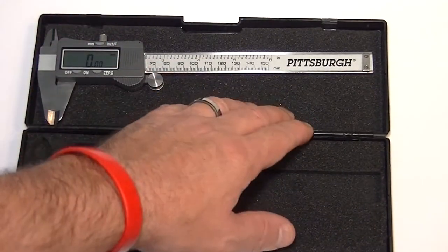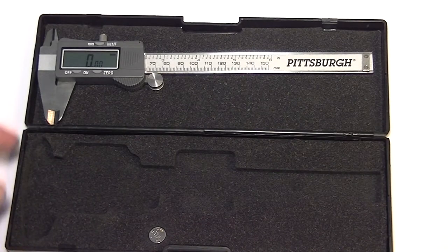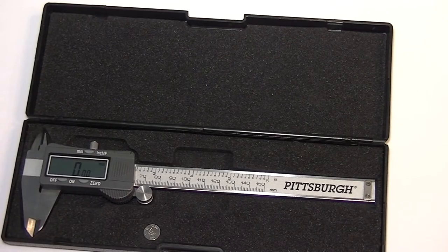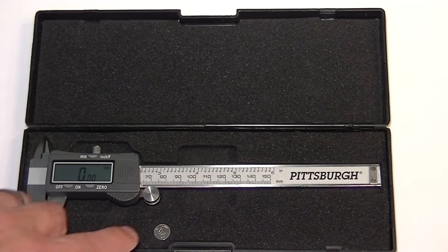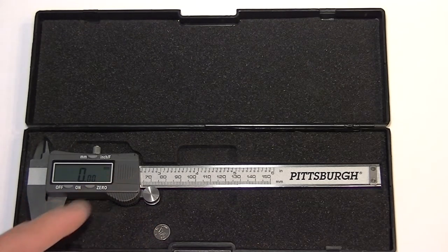It also has a top that's foam covered. This is a precision instrument so you want to keep from hitting it and jarring it or dropping it and protect it as much as possible from hard hits and jars. It does come with one extra battery in the case and one already installed.